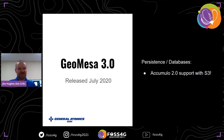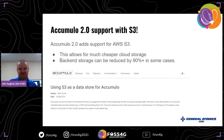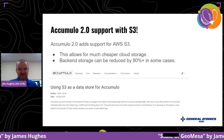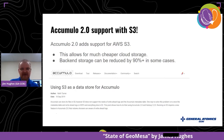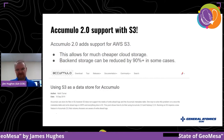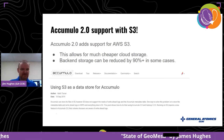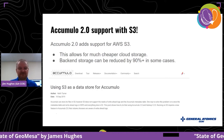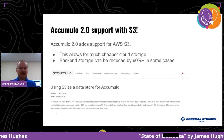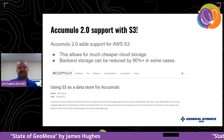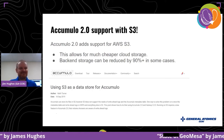One of the big things in GeoMesa 3.0 is that we added Accumulo 2 support. Accumulo is a distributed database like Apache HBase, which means you need distributed storage. Most databases access local files, but Accumulo and HBase read files from HDFS. HBase has had support for cloud storage like AWS S3 or Azure Blob Storage for a few years, so people asked what it would take to get Accumulo to support that — and it finally came in Accumulo 2.0.